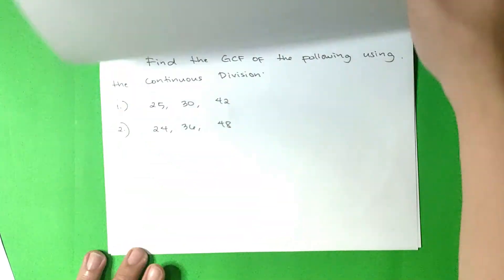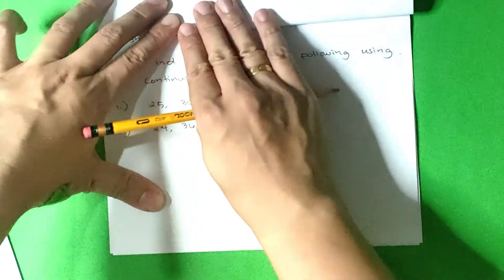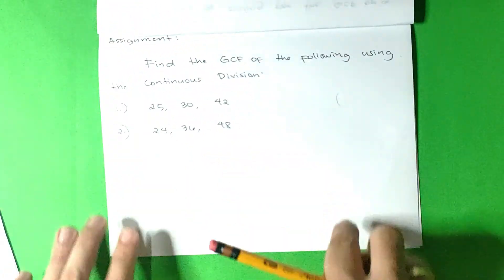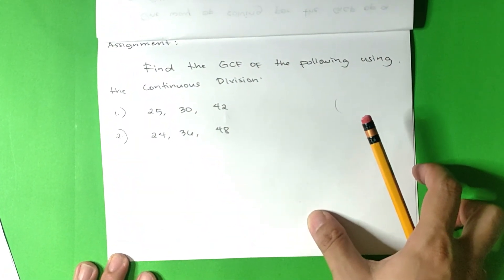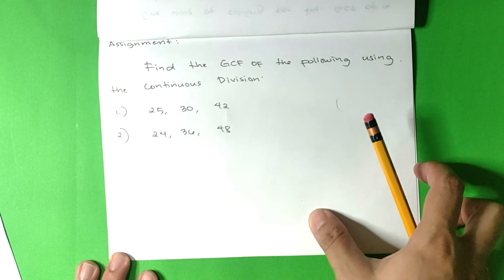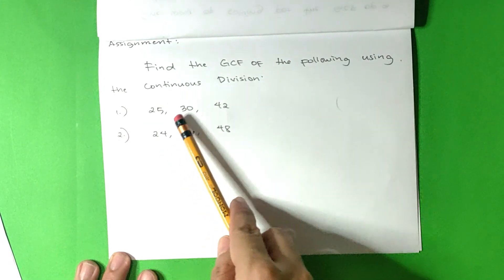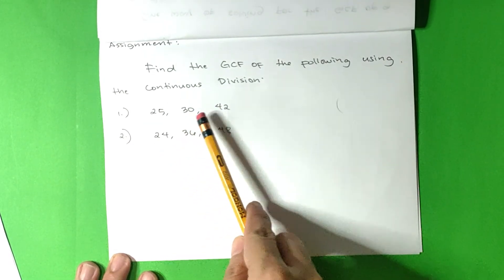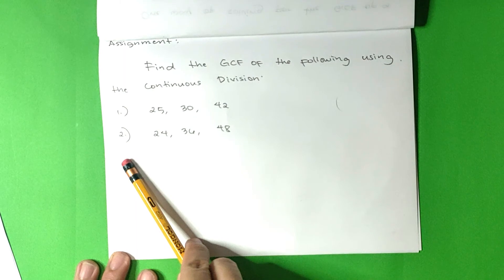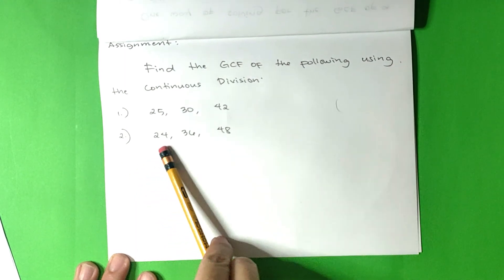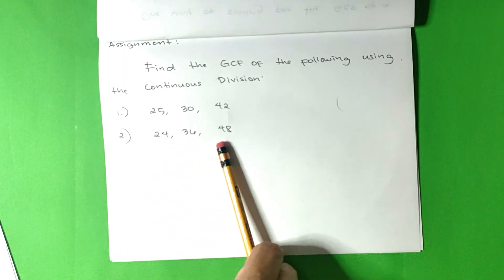For your assignment, find the GCF of the following using the division method. Number 1: 25, 30, 42. Number 2: 24, 36, 48.